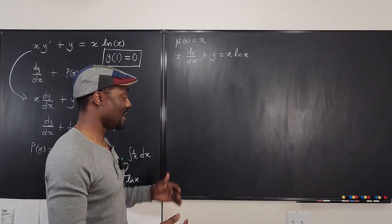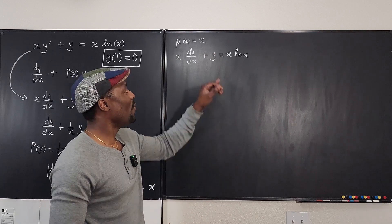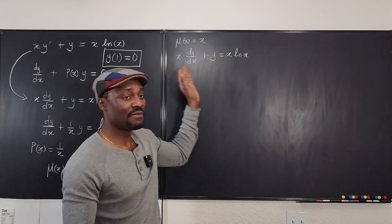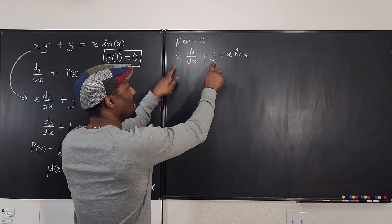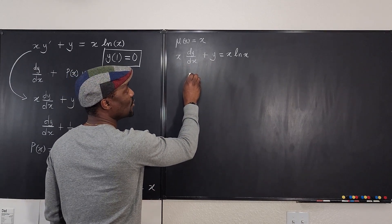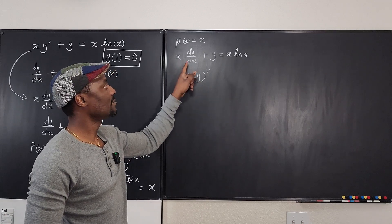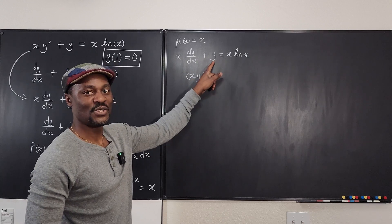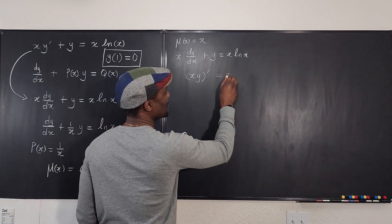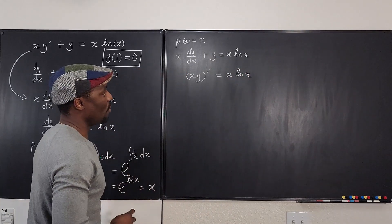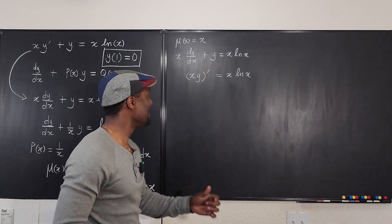Whenever you apply the integrating factor and multiply through, the left-hand side automatically becomes a product rule expression. This looks like we've applied the product rule to the derivative of xy — keep the first, differentiate the second, plus differentiate the first and keep the second. So the left side is the derivative of x times y, and the right side is x times the natural log of x.